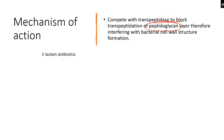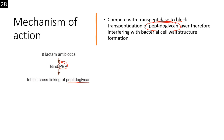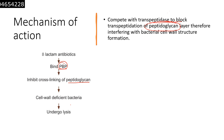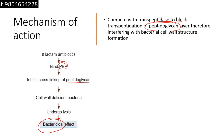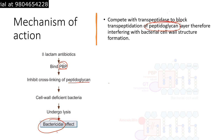Beta-lactam antibiotics bind to PBP (penicillin binding protein) and inhibit cross-linking of the peptidoglycan layer. This causes cell wall deficiency in the bacteria, and the bacterial cell undergoes lysis, producing a bactericidal effect — meaning killing of the bacterial cell.